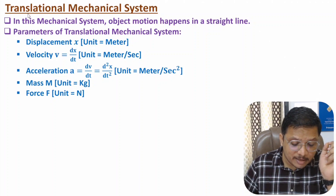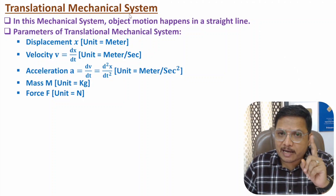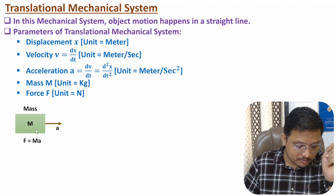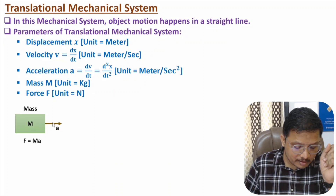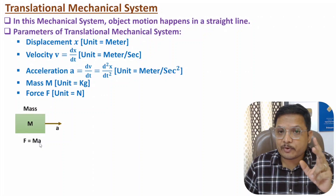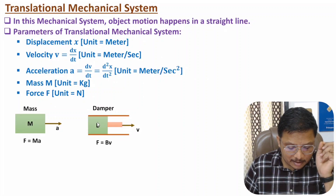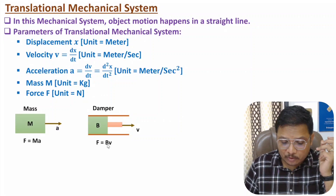With translational mechanical system we analyze force in different ways. If you have a mass m and the body has acceleration a, then the force associated with mass will be F = m × a. If you have a damper moving with velocity v and having damping constant b, then the force associated with the damper will be F = b × v.